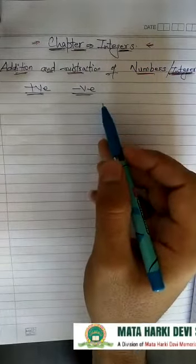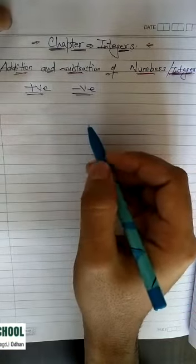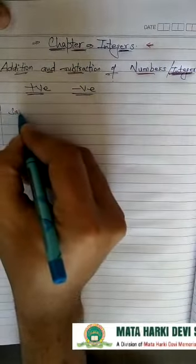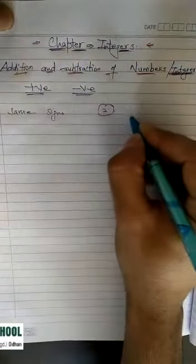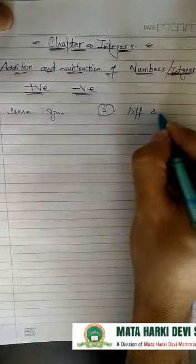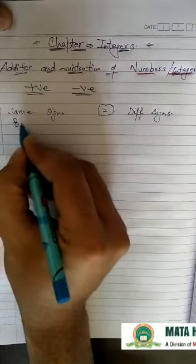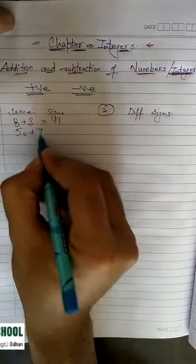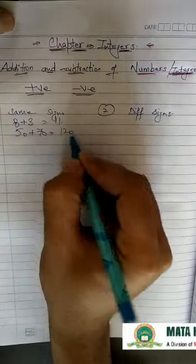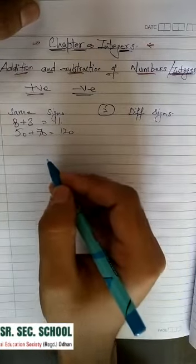The first part is finding the result when numbers have the same sign. The first case is with the same signs, and the second is with different signs. In the first part, we take positive numbers. For example, 8 plus 3 gives 11, or 50 plus 70 is equal to 120. You have done these calculations many times before.